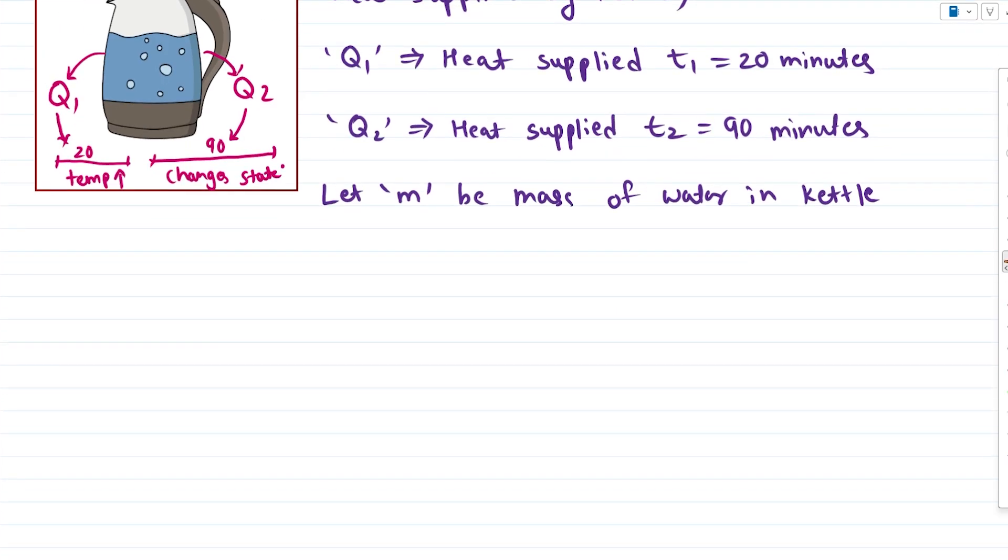First part of this question: Since Q1 is the heat required to change temperature of water, we are using this Q1 heat to change the temperature of water from 0 degree Celsius to 100 degree Celsius. Heat by definition, if we have to calculate, we use the formula where heat Q1 is equal to mass of the material, so mass of water times the specific heat capacity of the material SW and change in temperature that is delta T.